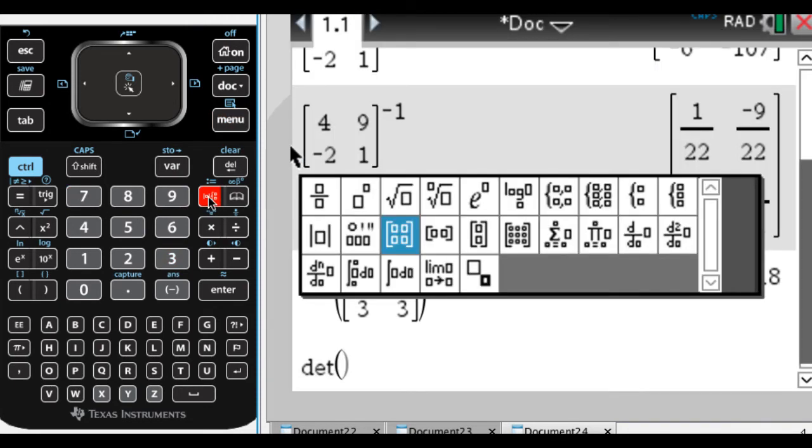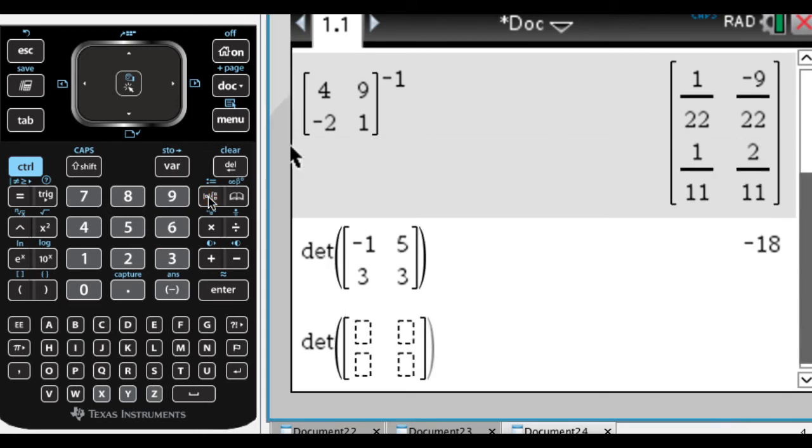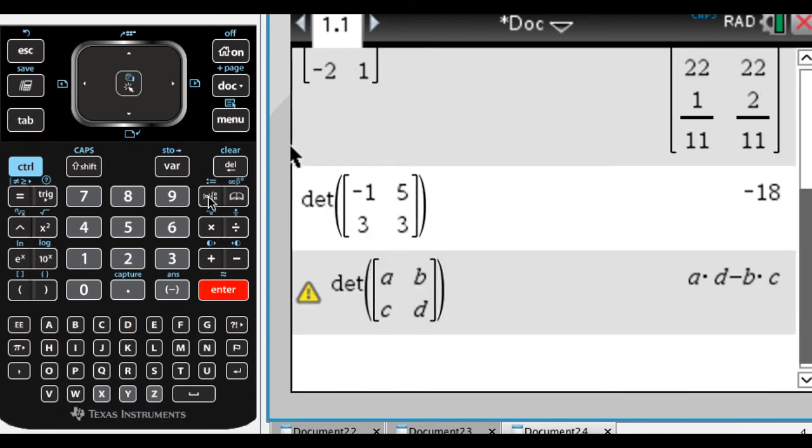Now what I'm going to do is, say I forgot how to take a determinant by hand but I have a calculator handy. I'm just going to do this, and the calculator will find this determinant. It says the determinant is AD minus BC, and it's giving you a warning. Let's see what the warning is.